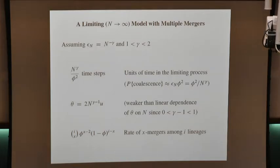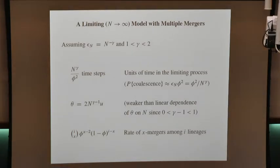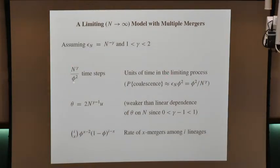Here's an example where I assume epsilon scales as N to some power minus gamma. In that case, the disturbance event is driving population turnover and affecting coalescence. The timescale comes again from what we did for the Wright-Fisher model — calculating the probability of coalescence for a pair and using that to set how we measure time. For any population model, you calculate the probability of coalescence and invert that to get the timescale.